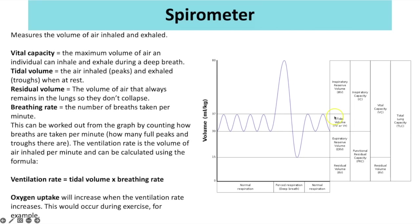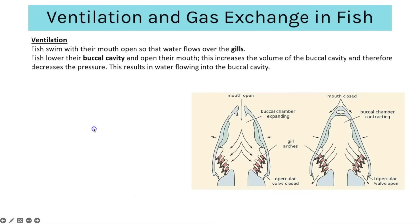Oxygen uptake will increase when the ventilation rate increases, for example during exercise. Next we move on to ventilation and gas exchange in fish, which also count as large organisms. The challenge fish face in particular is that there is less oxygen dissolved in water than there is in the atmosphere, which leads to issues with maintaining the concentration gradient.